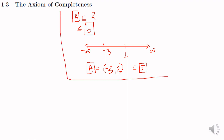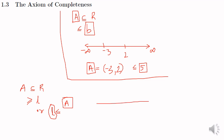Now, let A be any subset of R. If every element of A is greater than some real number L, or L is less than every element of the set A, then we say that the set A is bounded below and the number L is called the lower bound of the set A. For example, look at the same example A equals the open interval (minus 3, 2). You can see that every number here is greater than or equal to minus 4.